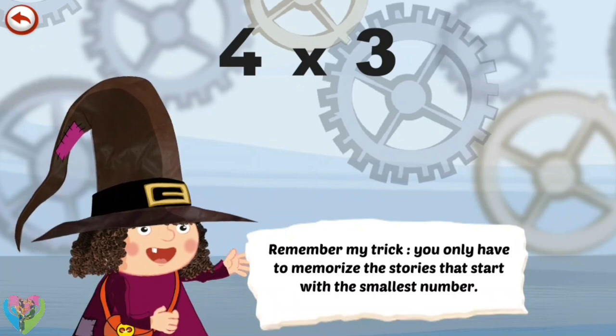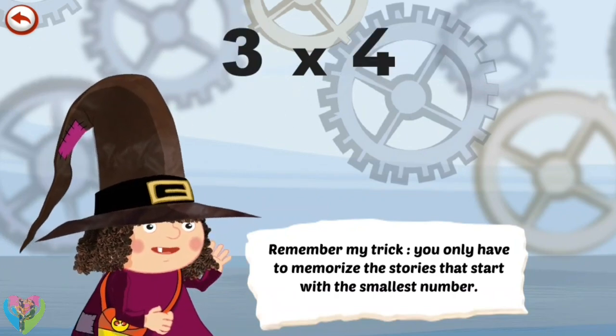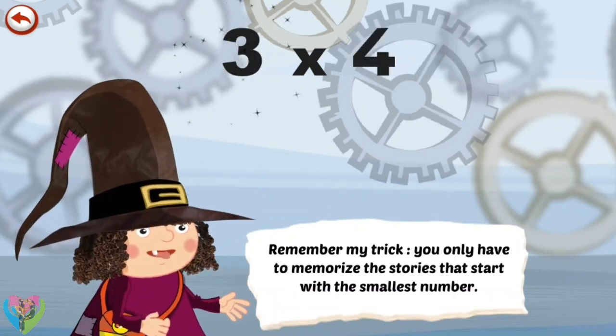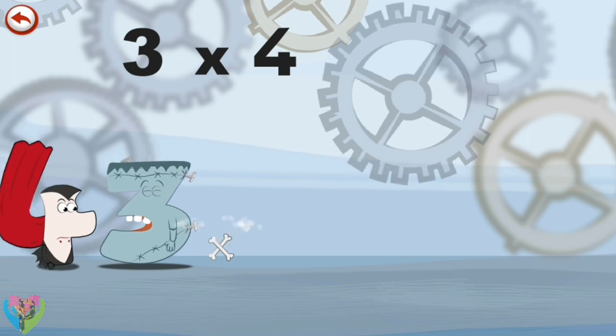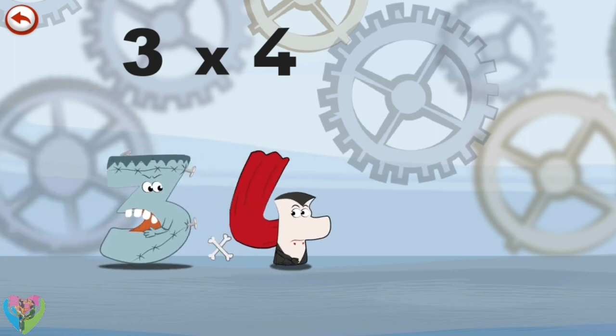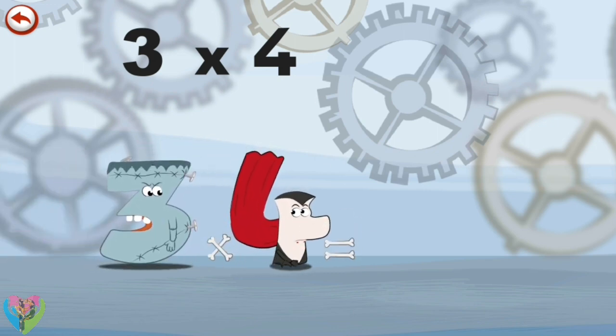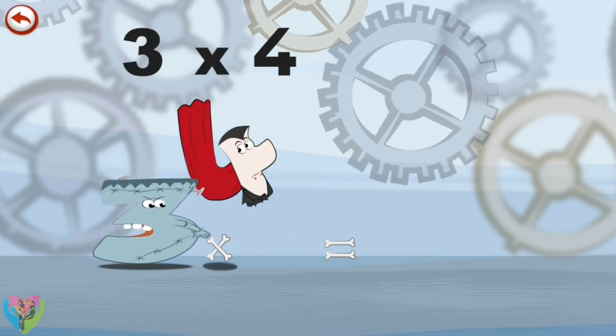Remember my trick, you only have to memorize the stories that start with the smallest number. What's the story of 3 times 4? 3 Squeaks is a bit scared of Vamp 4's bite, and one day he does bite his head.